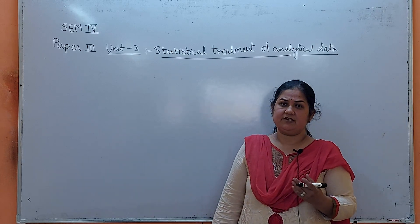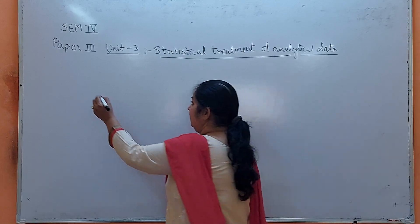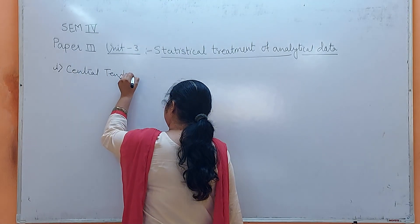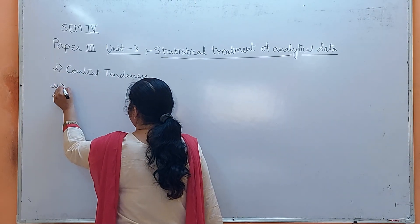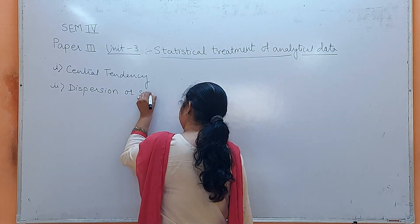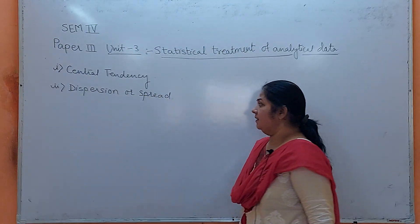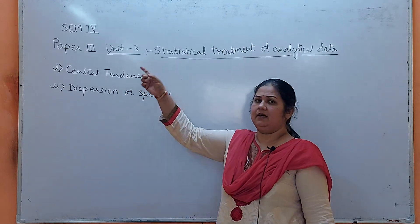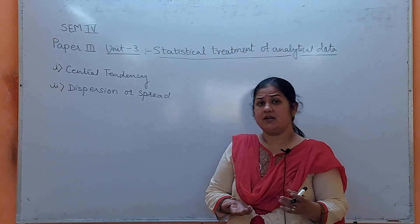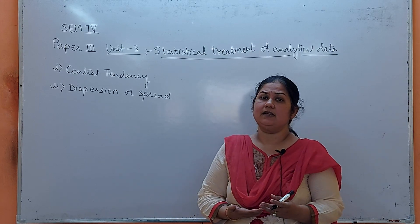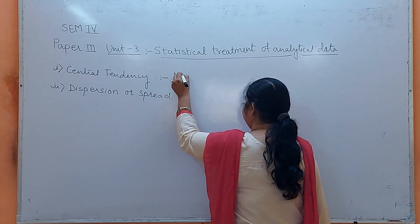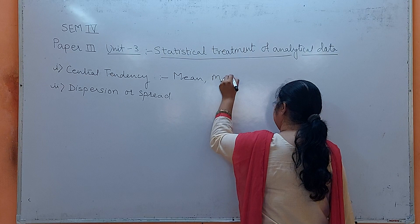A set of observations has two basic characteristics. The first is central tendency — the scatter around the mean is called central tendency. The second is dispersion or spread. Central tendency includes mean, median, and mode.